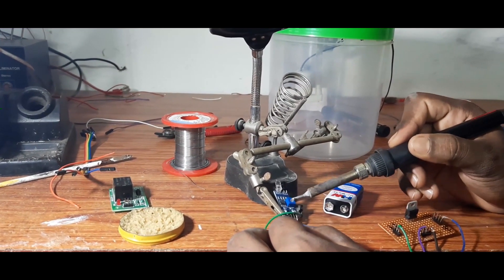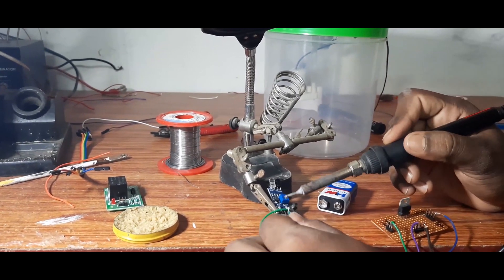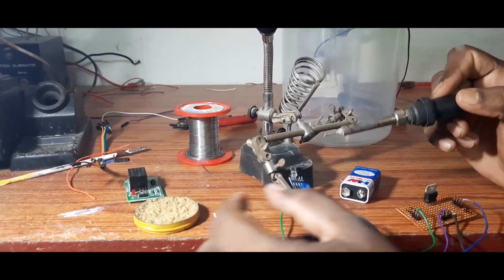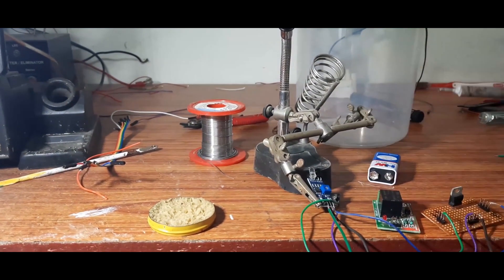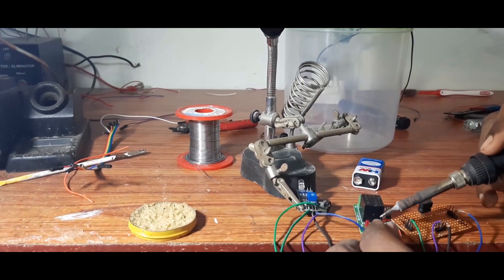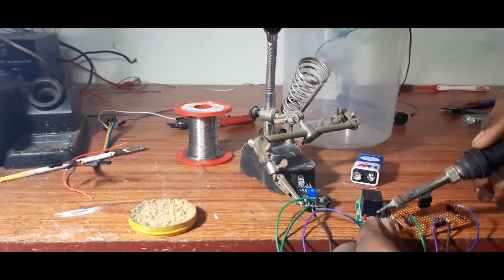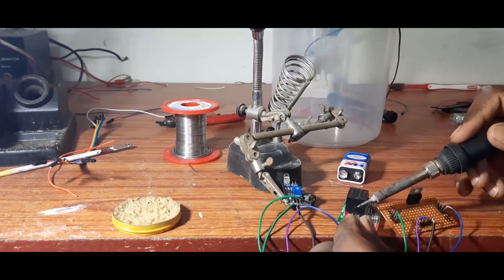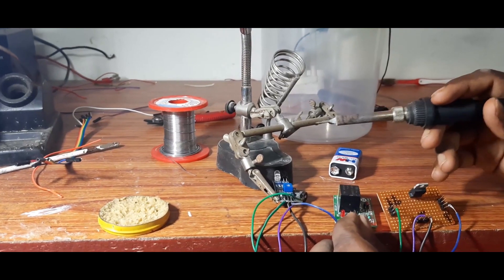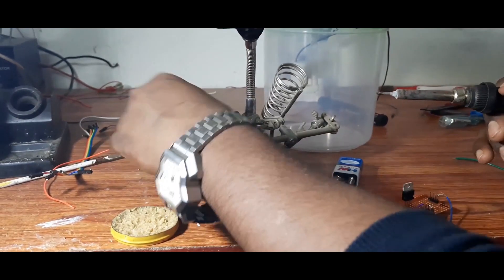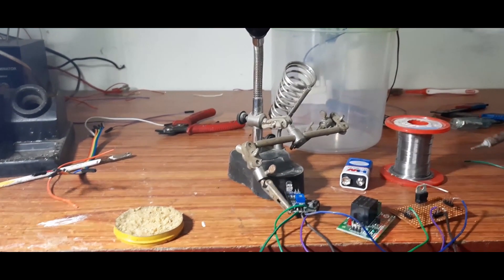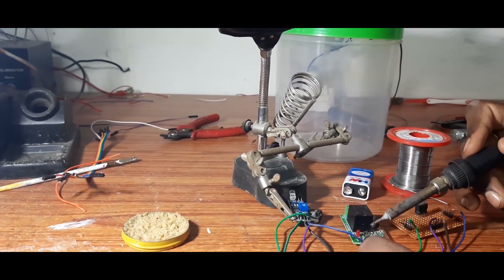And we need to solder the output for the IR sensor and connect it to the input of the relay.